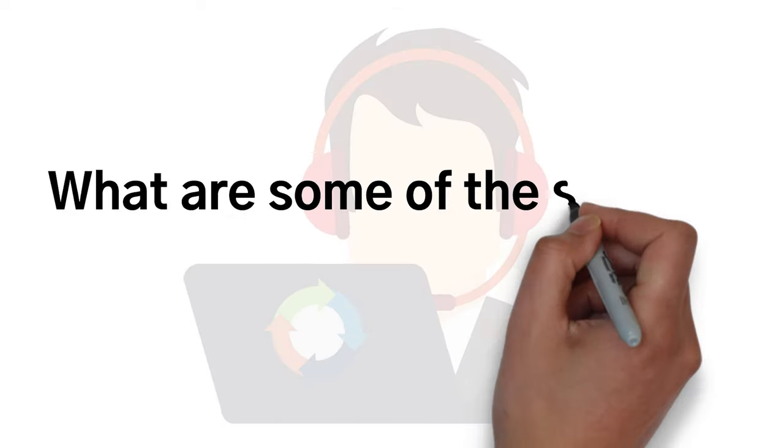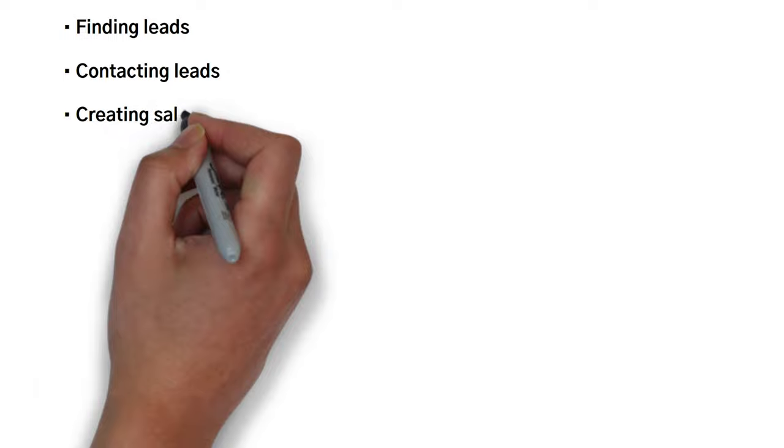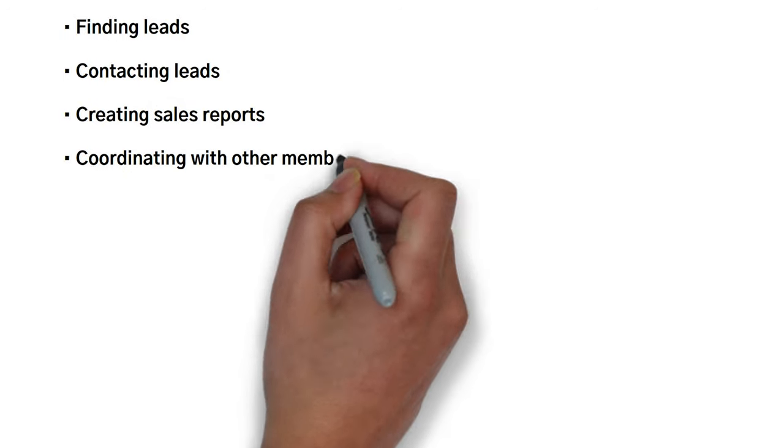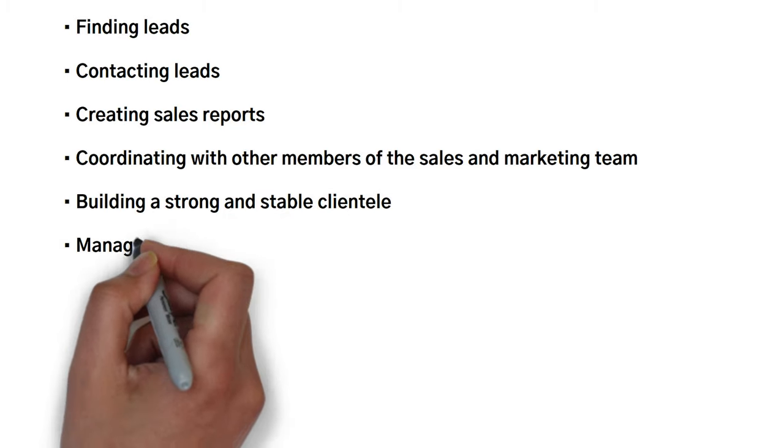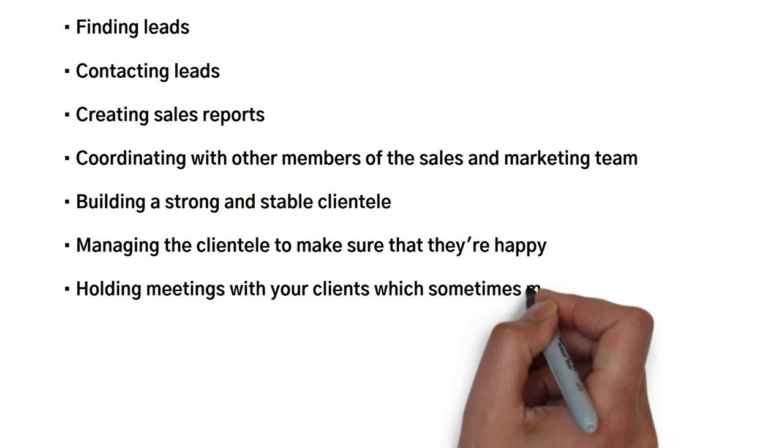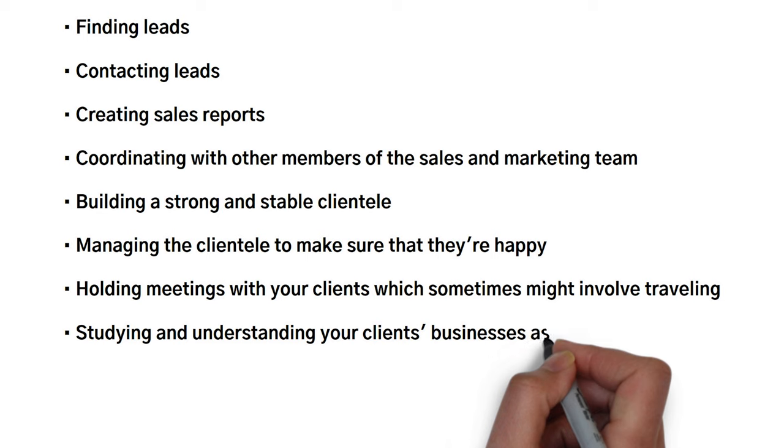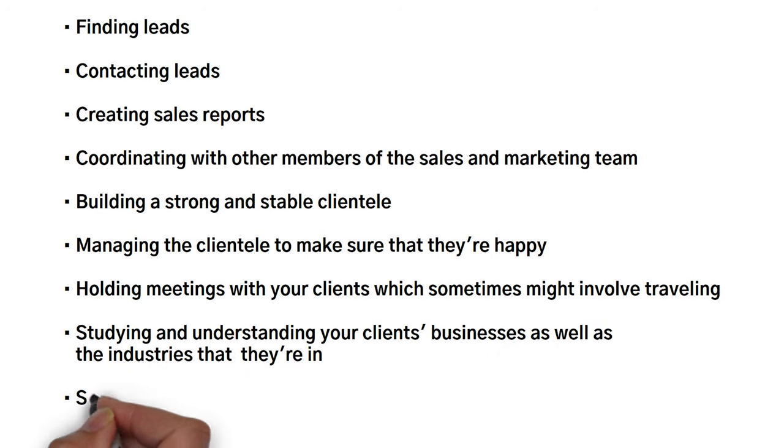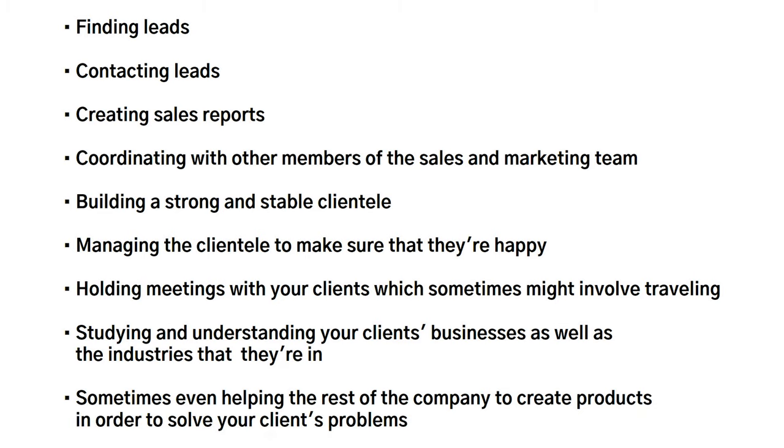What are some of the steps in the tech sales cycle? Finding leads, contacting leads, creating sales reports, coordinating with other members of the sales and marketing team, building a strong and stable clientele, managing the clientele to make sure they're happy, holding meetings with your clients which sometimes might involve traveling, studying and understanding your clients' businesses as well as the industries they're in, and sometimes even helping the rest of the company create products to solve your clients' problems.